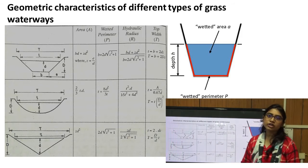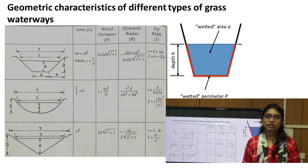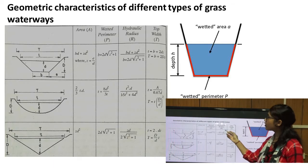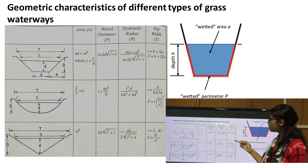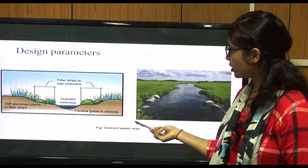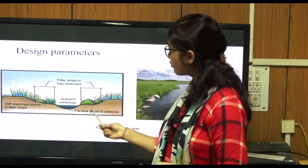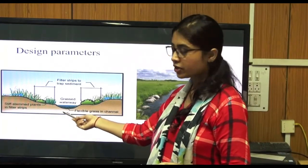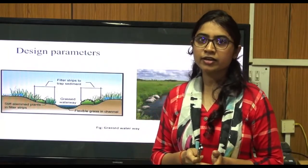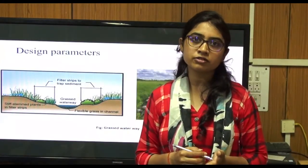After deciding the shape of waterway, we calculate geometric parameters using standard formulas. A is the cross-sectional area, P is the wetted perimeter — the part of the cross section in contact with water — and R is the hydraulic radius, which is the ratio of area to wetted perimeter. A filter strip is used to trap sediment before it enters the grass waterway, since sediment reduces the capacity of the structure over time.